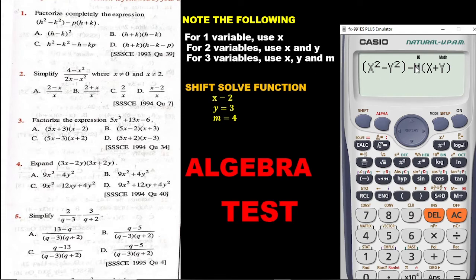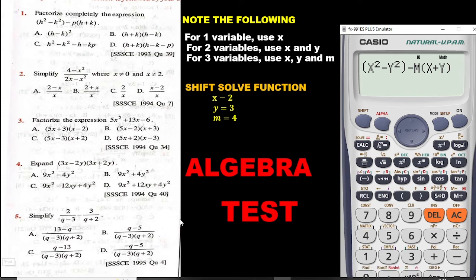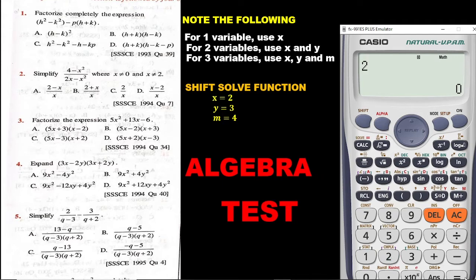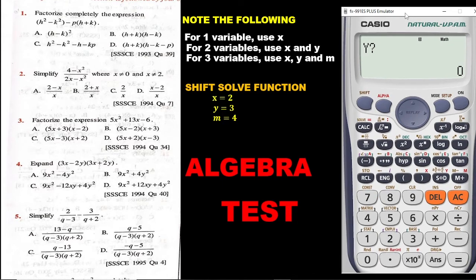Once you are satisfied, we are good to go. For X we are going to put 2, for Y we put 3, and for M we put 4. Press the solve button. In place of X put 2, press equals. In place of Y put 3, press equals. In place of M put 4, press equals. When you put 2, 3, and 4 into this expression, the final answer is minus 25.